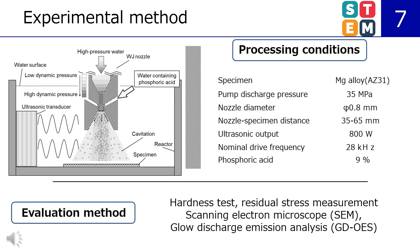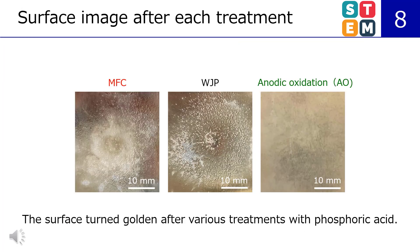Next is the experimental method. The magnesium specimen is AZ31. Here are the processing conditions and evaluation methods. This shows each processed specimen surface. In addition to MFC and WJP, the anodized specimen surface is also shown. The surface turned golden after various treatments with phosphoric acid.